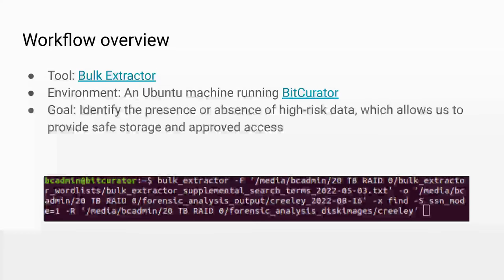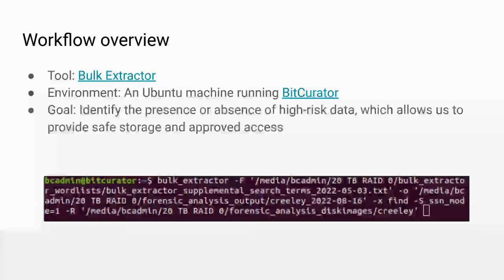We're reviewing Bulk Extractor results first and foremost for high-risk data, as it has implications for our storage policies. We're also reviewing for moderate-risk data, to which we want to restrict access. Moderate-risk data would be material that isn't high-risk enough to require secure storage, but which we don't want to make widely publicly available — things such as student contact information.